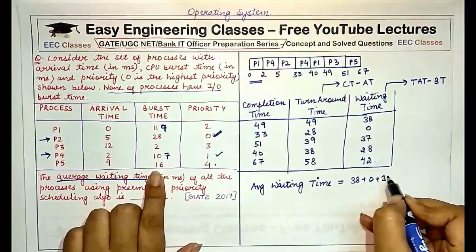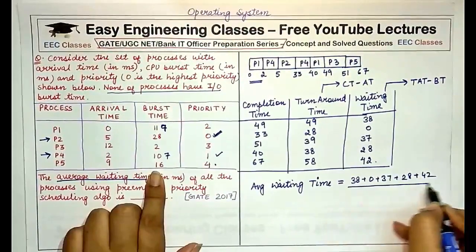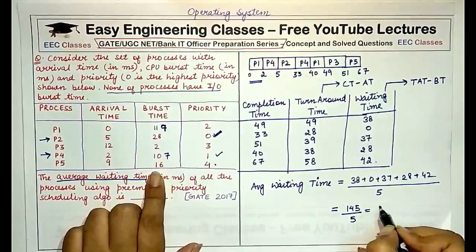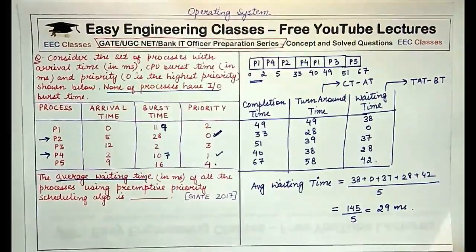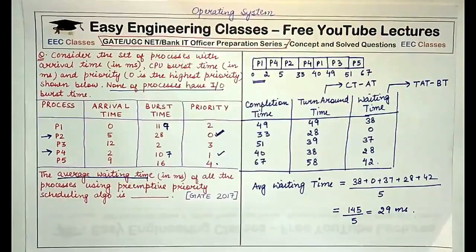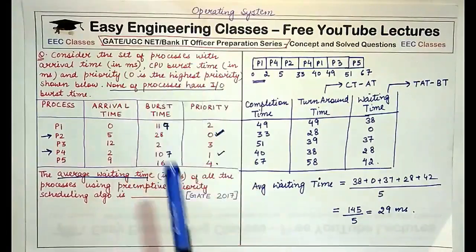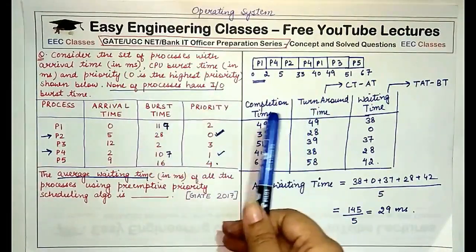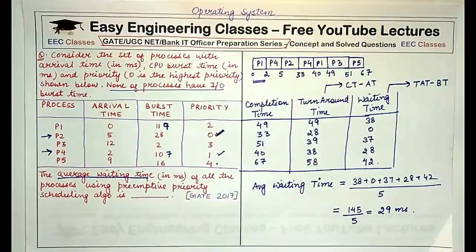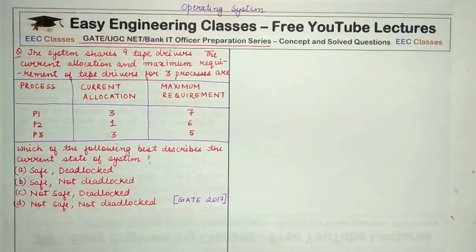38 + 0 + 37 + 28 + 42 = 145, divided by 5, gives 29 milliseconds. So the average waiting time is 29ms. That was an example of preemptive priority scheduling: make a Gantt chart, find completion time, turnaround time, and waiting time. Also make sure to check whether 0 or 4 is defined as the highest priority in your question.